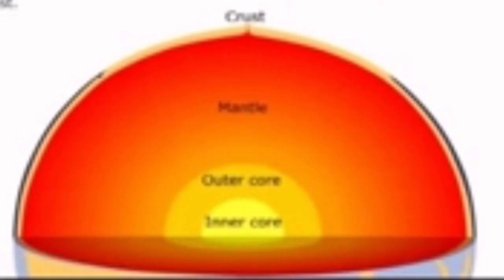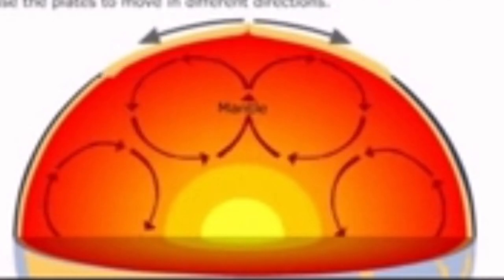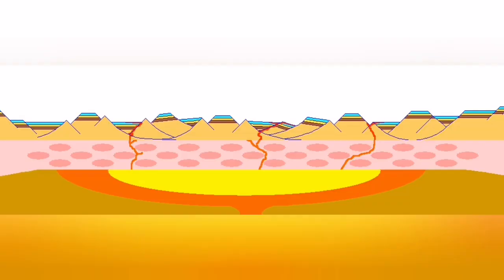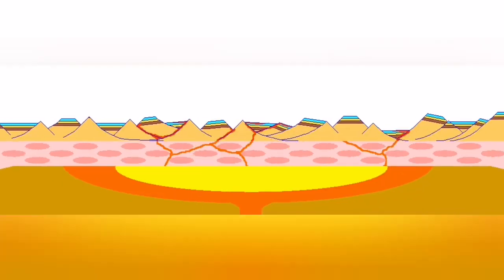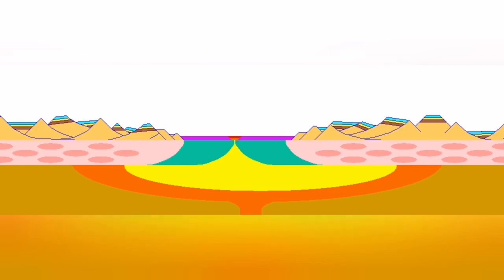These cracks are where the separation or extension of the crust happens, and the magma forms and fills the gap created simultaneously — so there is practically no gap. The eruption in Iceland is of this type.